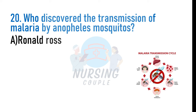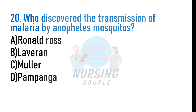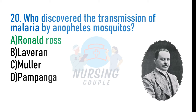Who discovered the transmission of malaria by Anopheles mosquitoes? A. Ronald Ross, B. Laveran, C. Muller, D. Pampana. The answer is Option A: Ronald Ross. On 20th August 1897, Ronald Ross made his landmark discovery that malaria is transmitted by Anopheles mosquitoes. For this, Ronald Ross was awarded the Nobel Prize for Physiology or Medicine in 1902.